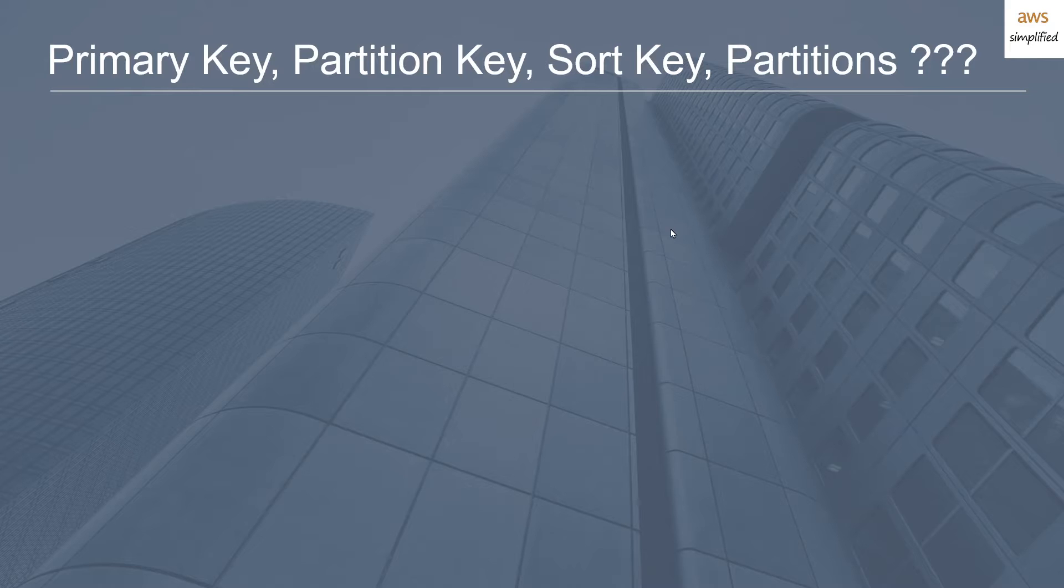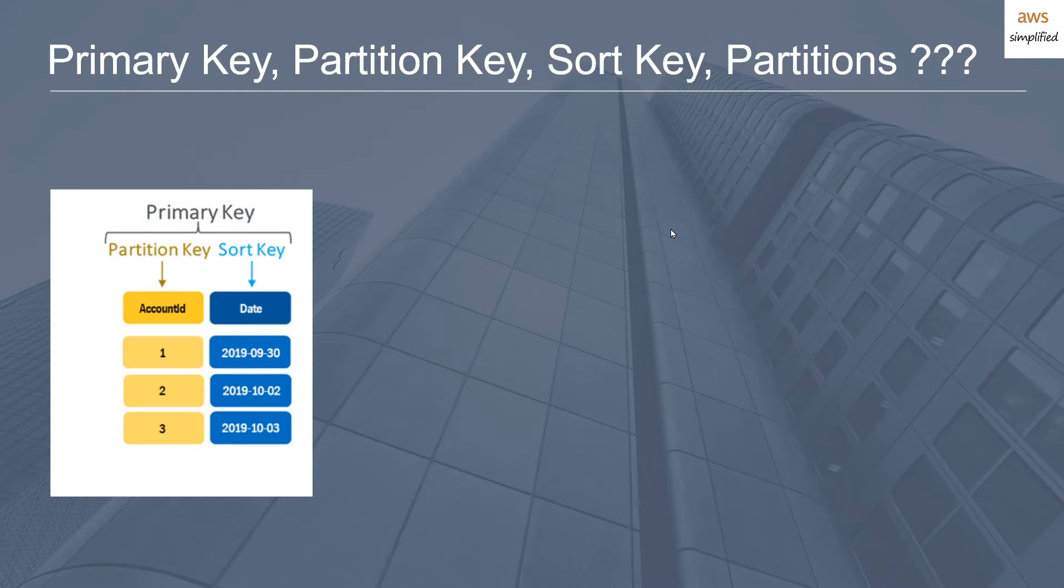Okay, so before we get into choosing a schema, we need to define a couple terms here. In DynamoDB, there's a couple of them: primary key, partition key, sort key, range keys, a million different types of keys, and they all mean different things. So let's quickly define them.